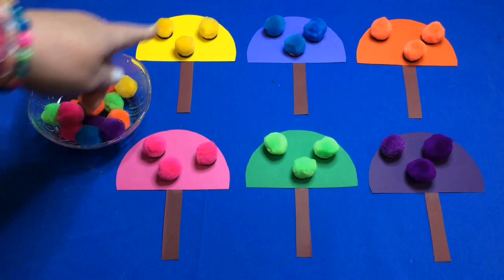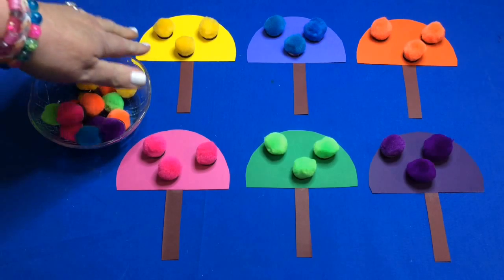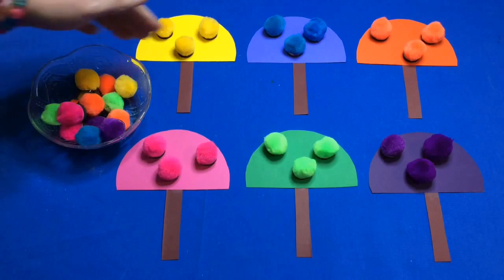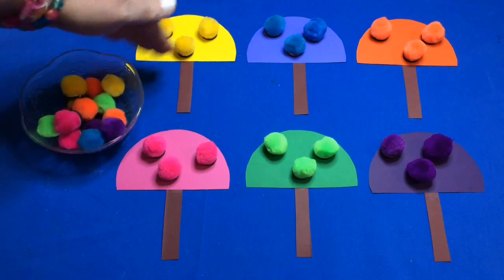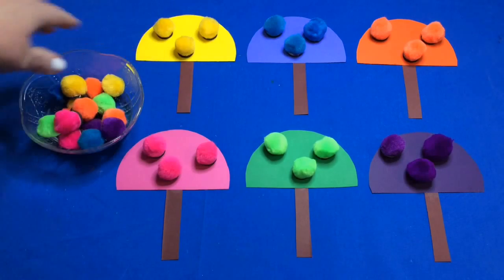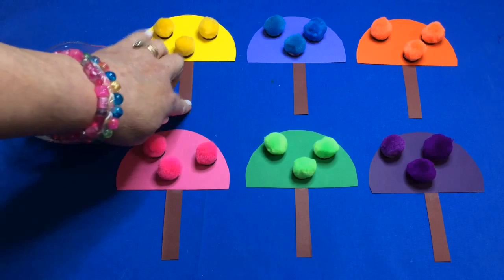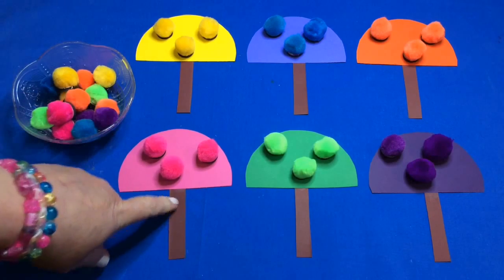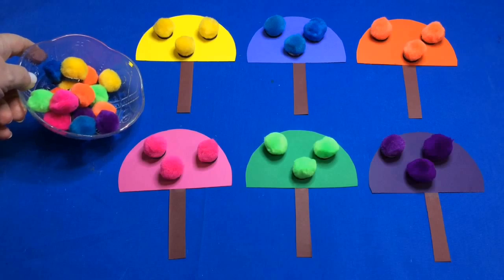I made these umbrellas out of colored cardstock paper by tracing around a bowl in six different colors, then cutting off about a quarter of the circle to make an umbrella shape. You can make them however you want. I attached a brown bottom for each umbrella and have pom-poms that match the six colors.